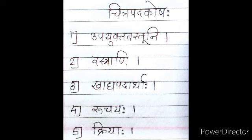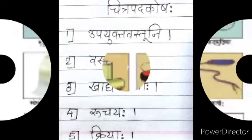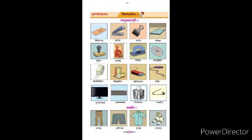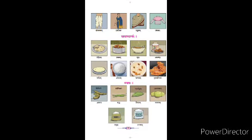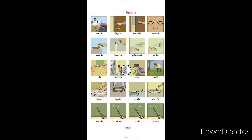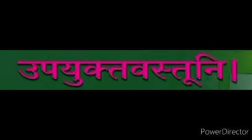Here also we see five types of names. First, Upayukta Vastuni; Second, Pastrani; Third, Khatya Padarthaha; Fourth, Ruchayah; and Fifth, Kriyaha. In Standard 8th and 9th, we have studied different pictures, and in 10th Standard we are going to learn 58 pictures like useful things, clothes, food, taste. We learn the names one by one.